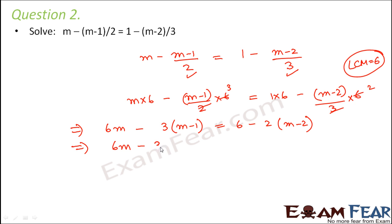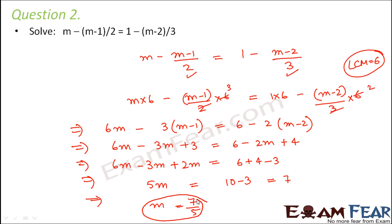So here it becomes 6m - 3m + 3 = 6 - 2m + 4. Therefore we will put all the variables on left hand side, that is 6m minus 3. So this would be 6 + 2, 8m - 3m, that is 5m is equal to 10 - 3. So this would be equal to 7, or we can say m would be equal to 7/5. So m = 7/5 would be a solution for this equation.